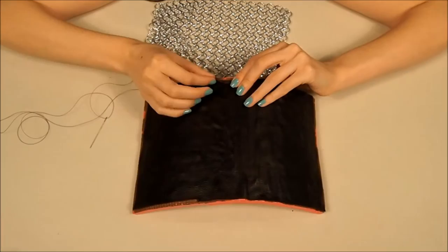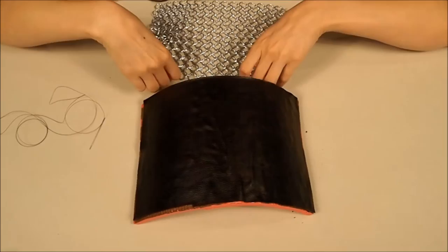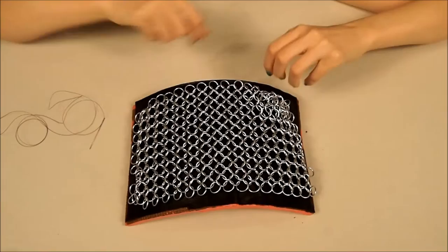Here we have the piece of EVA foam with the pleather glued onto it. You want to make sure that you have a good bend on it so it's more form-fitting to the arm. And here I have the chainmail that we worked on in one of our earlier videos and you're simply just going to lay it on here.